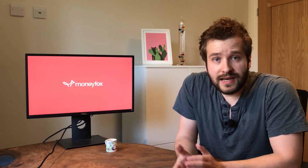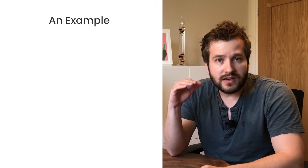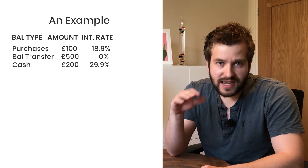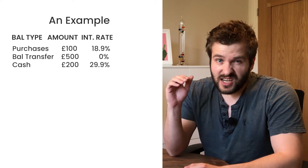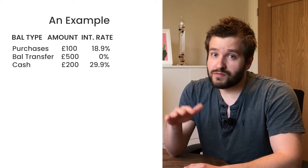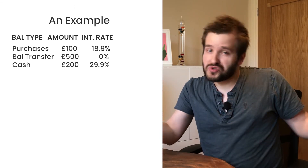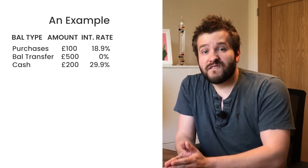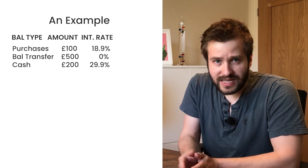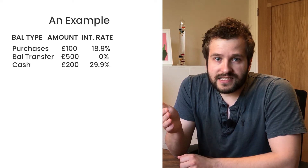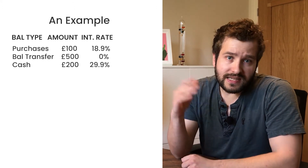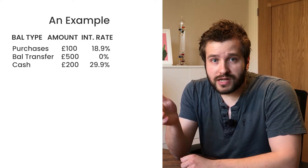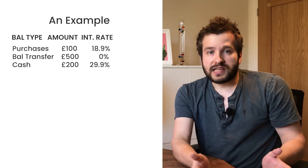Let's do a really simple example. Say you have three balance types: purchases, a balance transfer balance, and some cash. Now, you really shouldn't have a credit card with all three of those types of balances because you're almost guaranteed to be paying too much interest — but let's set that aside for the sake of the calculation. Let's say your purchase interest rate is 18.9%, your balance transfers are on a promotional 0% deal so no interest there, and the cash balance is on a 29.9% interest rate. All of these are annualized.